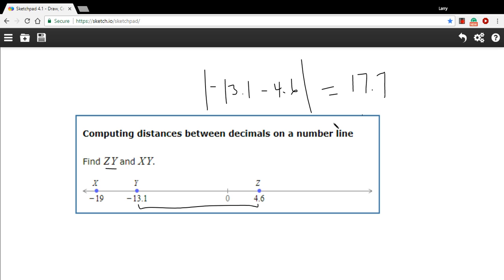Distance is always going to be a positive number. If you end up with a negative number, you've done something wrong. So that's ZY, the length of that segment.